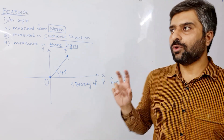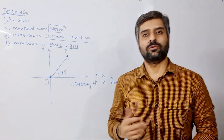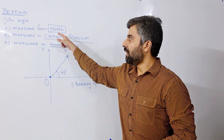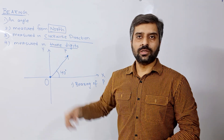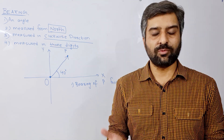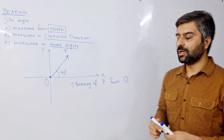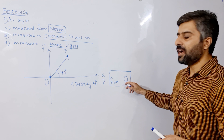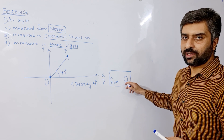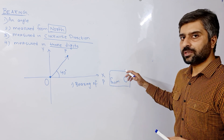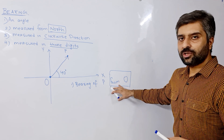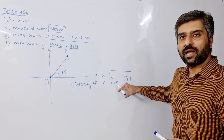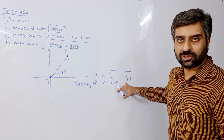Now what you need to know is where to start from — we have to measure our angle from north. So where will north be plotted? You will plot your north from where you have to measure the bearing. The word 'from O' tells you that you have to plot your north at O. From O means plot north at O.